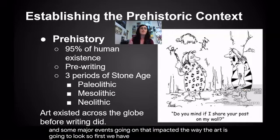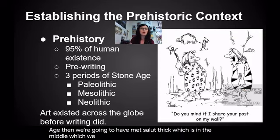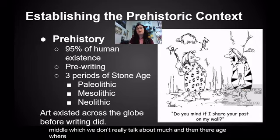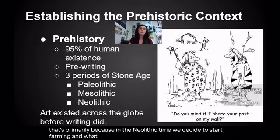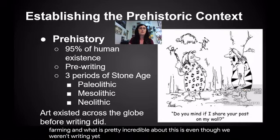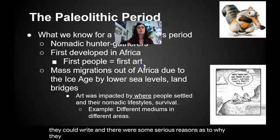First we have Paleolithic, which is the old Stone Age. Then we have Mesolithic, which is in the middle and we don't talk about much. Then there is Neolithic, the new Stone Age, where we start using tools in different ways — primarily because in the Neolithic time, we decided to start farming. What is pretty incredible is that even though we weren't writing yet, human beings were creating art long before they could write, and there were some serious reasons why they would do that.